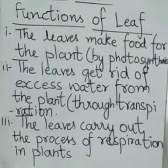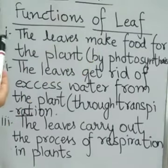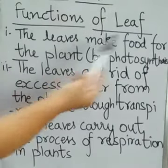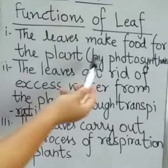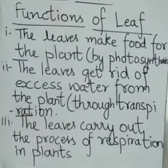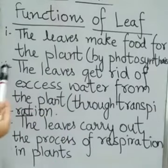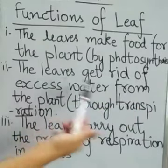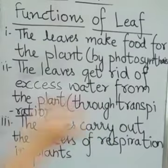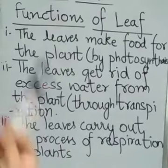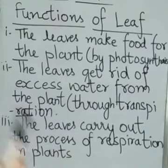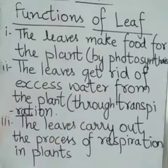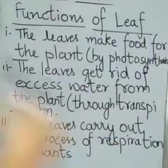Functions of leaf. The first function of the leaf is that leaves make food for the plant by photosynthesis — so they are the food factories of the plant. The second function is that leaves get rid of excess water from the plant through transpiration. Transpiration is a process in which water changes into water vapor and goes into the air, forming rain.